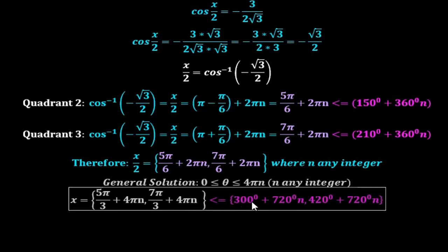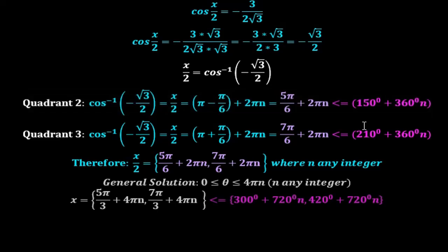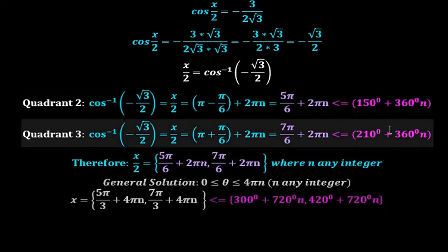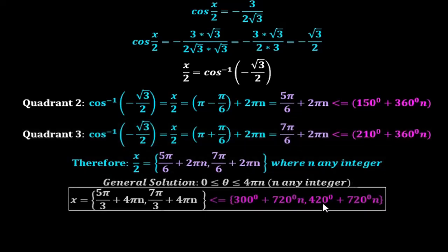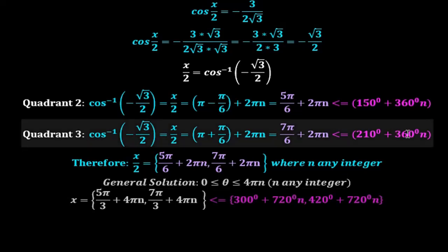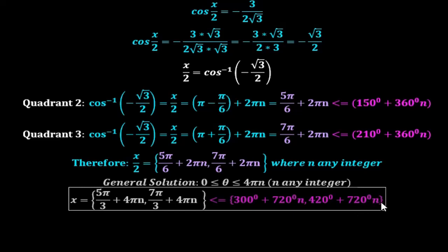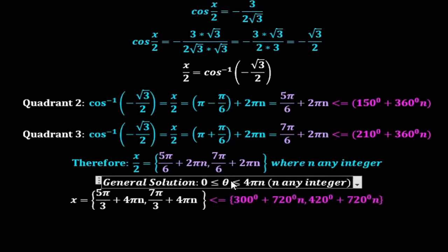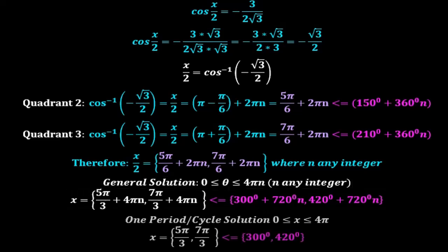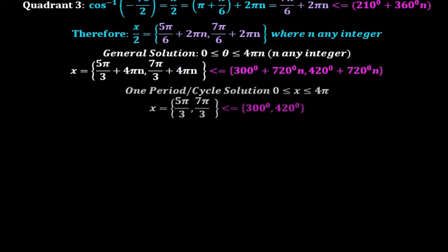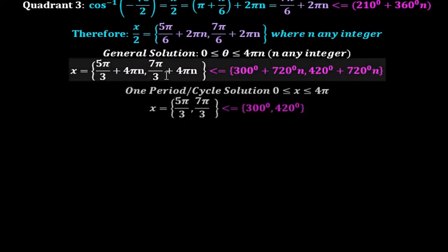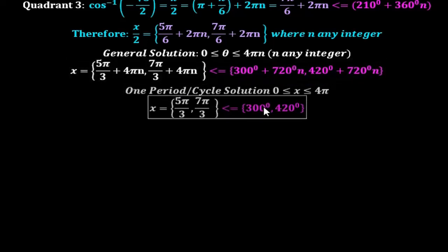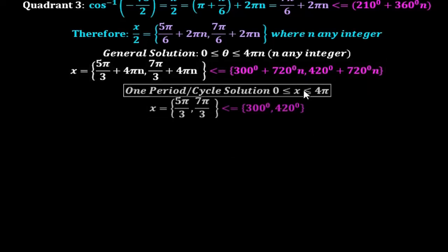In degrees: 150° × 2 = 300°, and 360°n × 2 = 720°n; 210° × 2 = 420°, and 360°n × 2 = 720°n. So this is the general solution for x, where x is between 0 and 4π. The one period solution is x = 5π/3 and 7π/3, which is 300° and 420°, where x is between 0 and 4π.